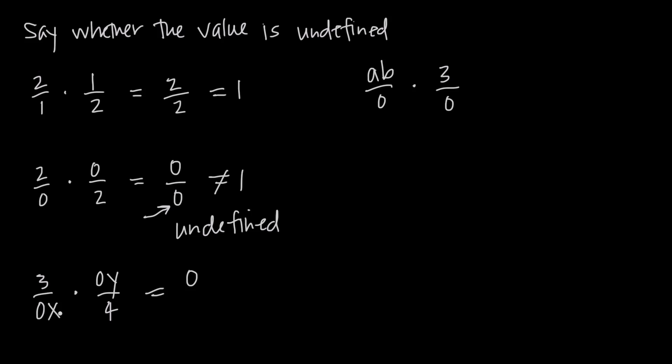In our denominator, we have 0 times x times 4. And it doesn't matter that we're multiplying by x and 4 because anything multiplied by 0 is still 0. So we still end up here with 0 over 0. And of course, we know that that is undefined.